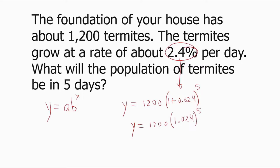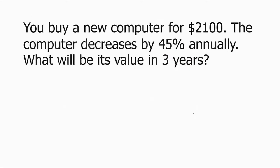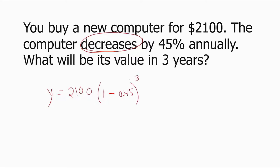Let's consider an example of decay. You buy a new computer for $2,100 — that's the initial amount. The computer decreases by 45% annually — that's the rate of decay. What will be its value in three years? b equals 1 minus 0.45, so y equals 2,100 times 0.55 raised to the third power. Whatever that number is, that will be the value of your computer after three years.